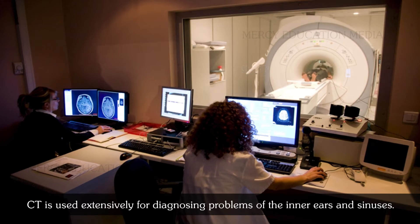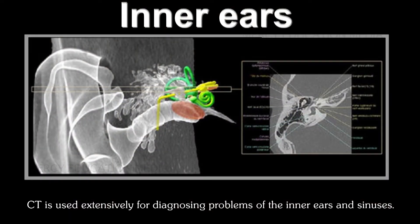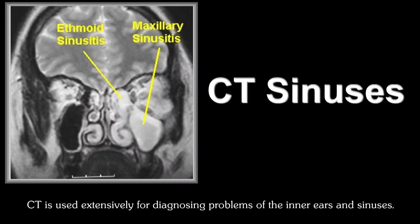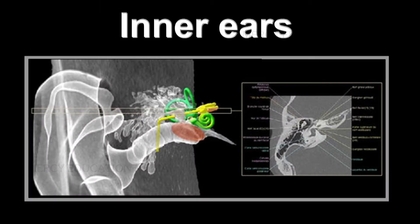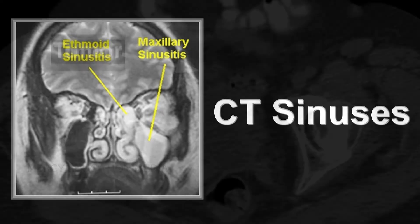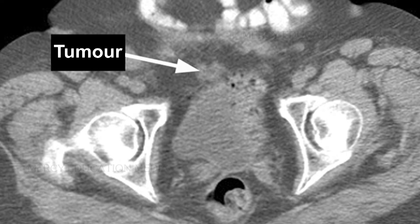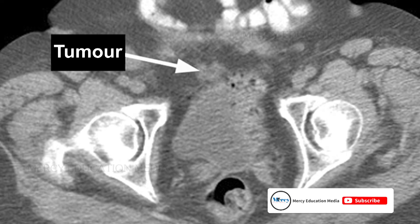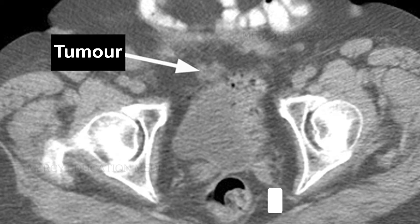Computed tomography is used extensively for diagnosing problems of the inner ears and sinuses. The anatomy of the inner ear and the sinuses is made up of delicate soft tissue structures and very fine bones. CT is excellent for imaging tumors or polyps in the sinuses and the diseases that cause degeneration of the small bones in the inner ear.